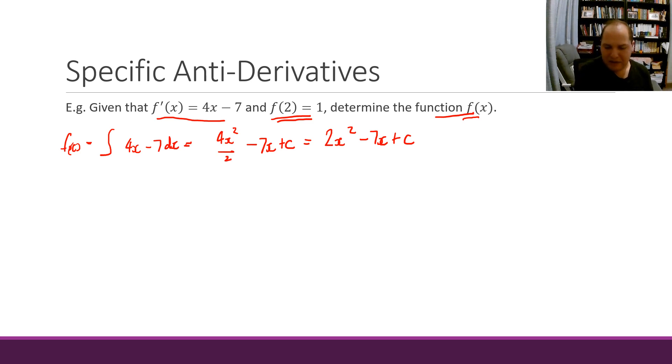Now what we need to do is, because we've got this initial condition, we can substitute in x equals 2, and we should get a value of our function of 1. So knowing that F of 2 equals 1, we can say that 1 equals 2 times 2 squared minus 7 times 2 plus c. Simplifying that: 2 squared is 4 times 2 is 8, minus 14 plus c, 1 equals negative 6 plus c, 7 equals c.